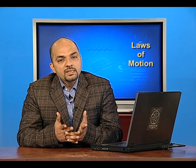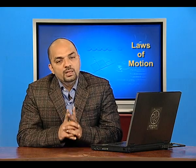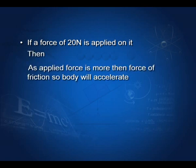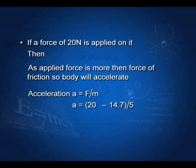Now if a force of 20 N is applied, the applied force is greater than the force of friction of 14.7 N, so the body will move. The net force = 20 − 14.7 = 5.3 N. Acceleration a = net force / mass = 5.3 / 5 = 1.06 m/s².